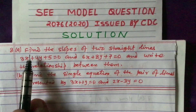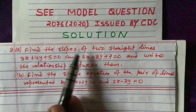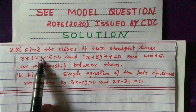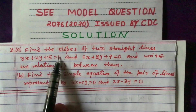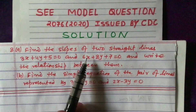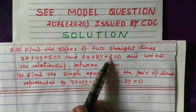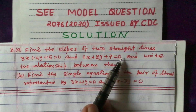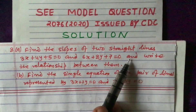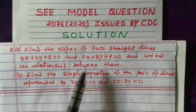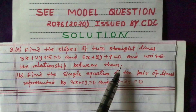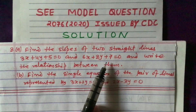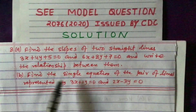The question is: find the slopes of two straight lines — 3x plus 4y plus 5 equals 0, and 6x plus 8y plus 7 equals 0. We are asked to find the slope of these two lines and write the relationship between them.